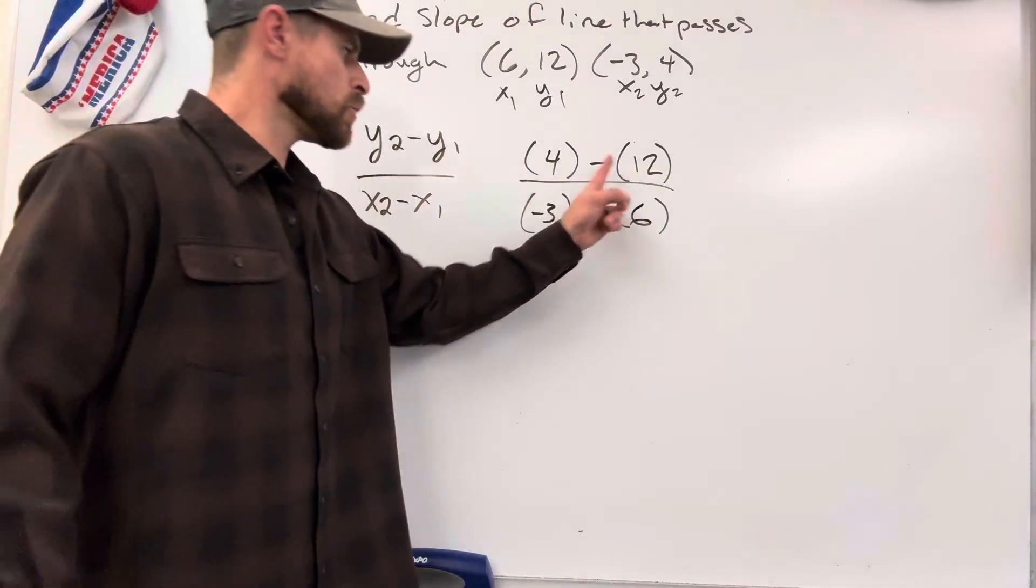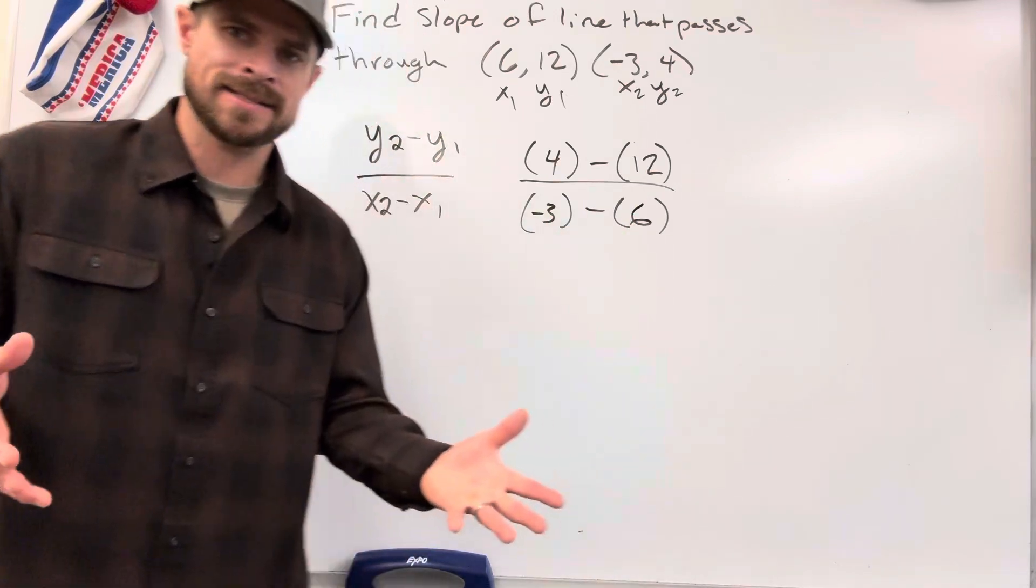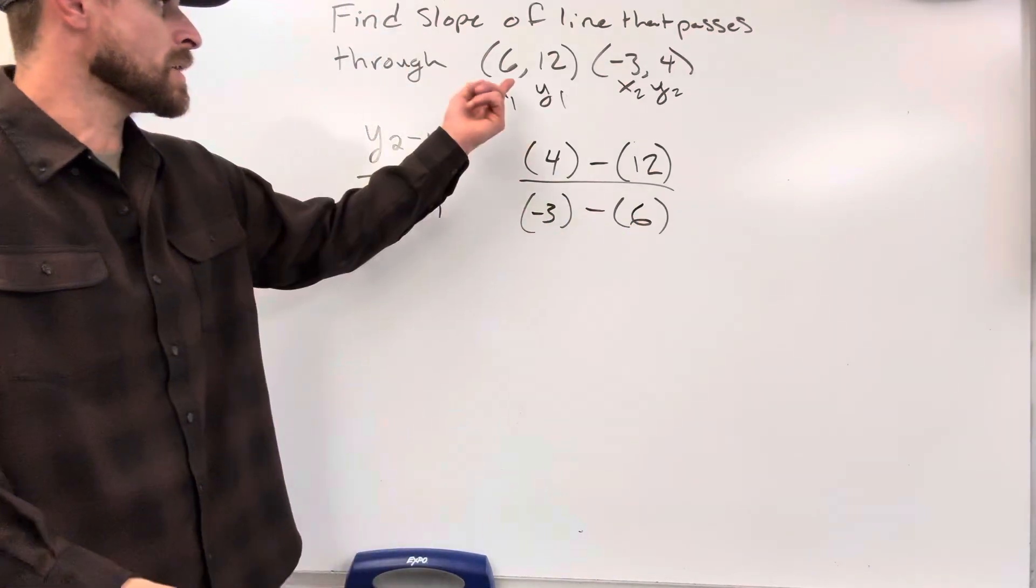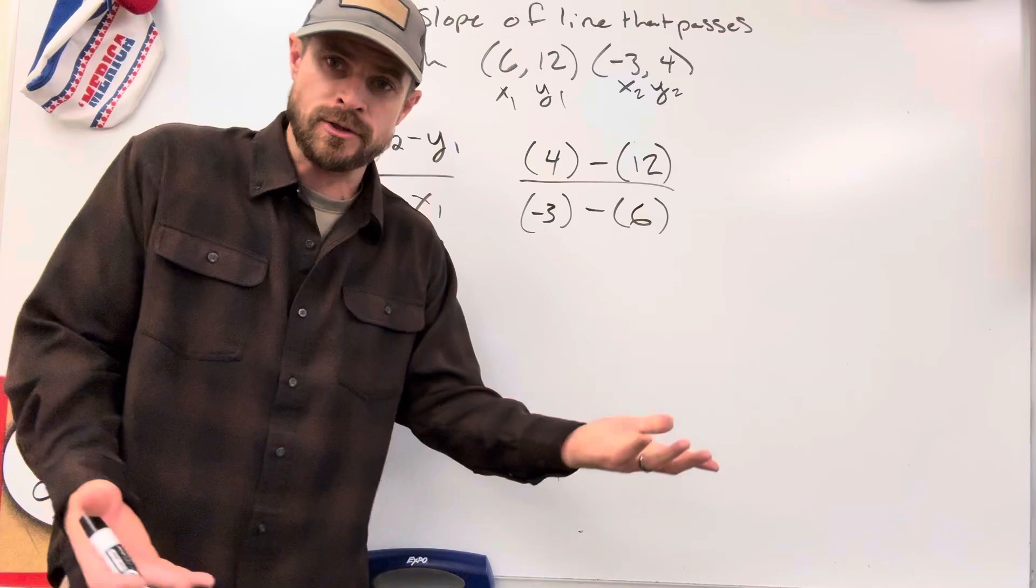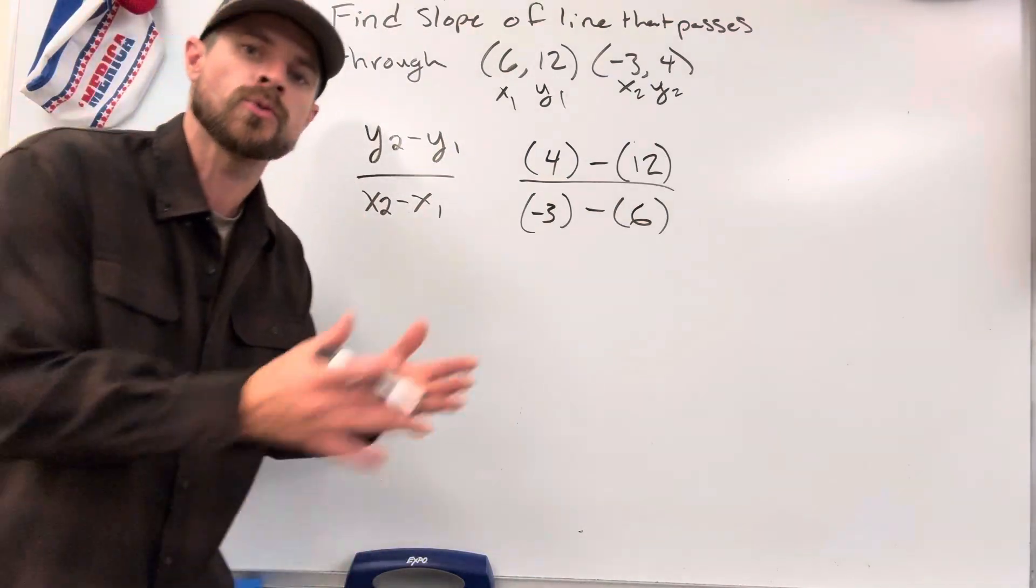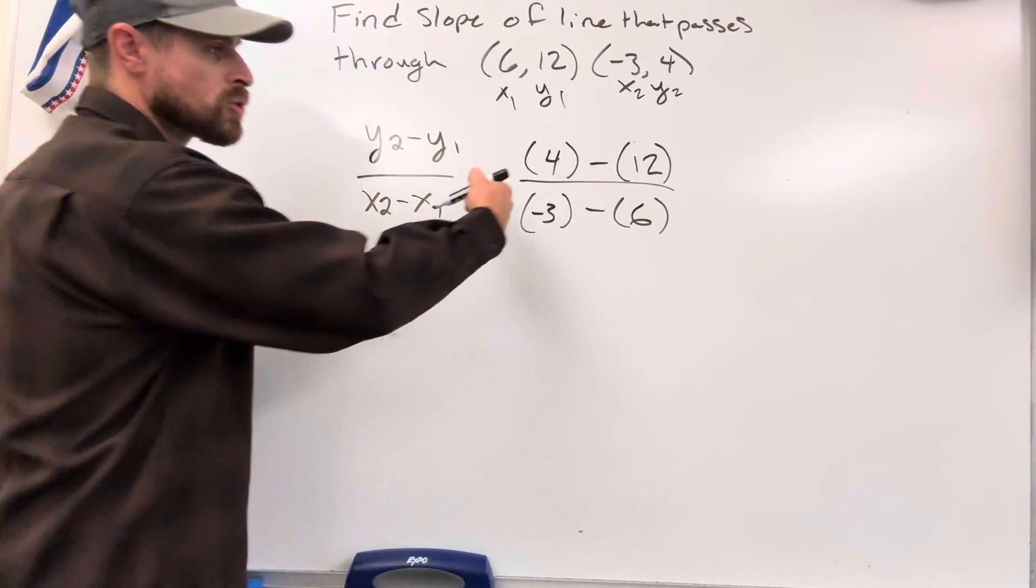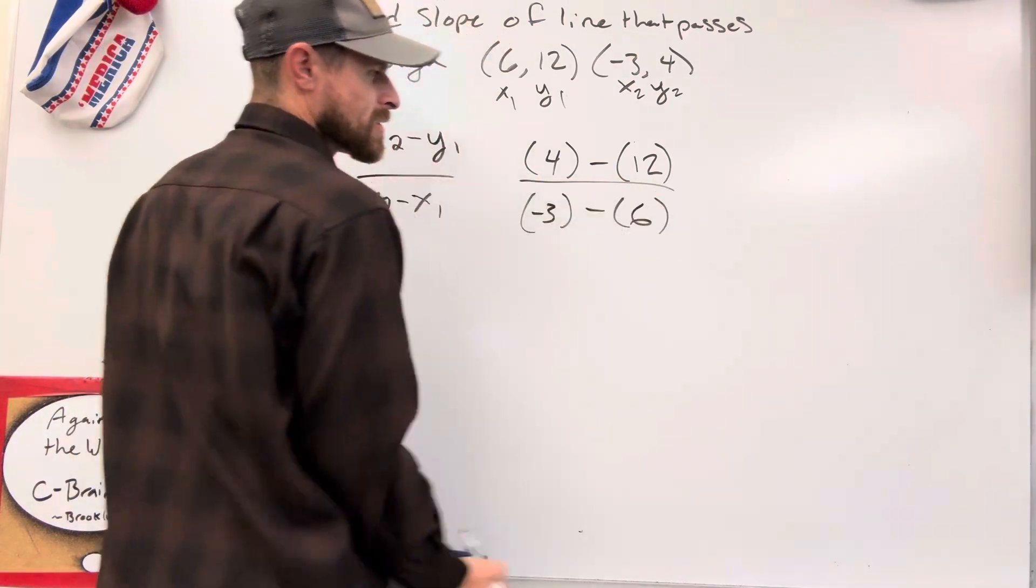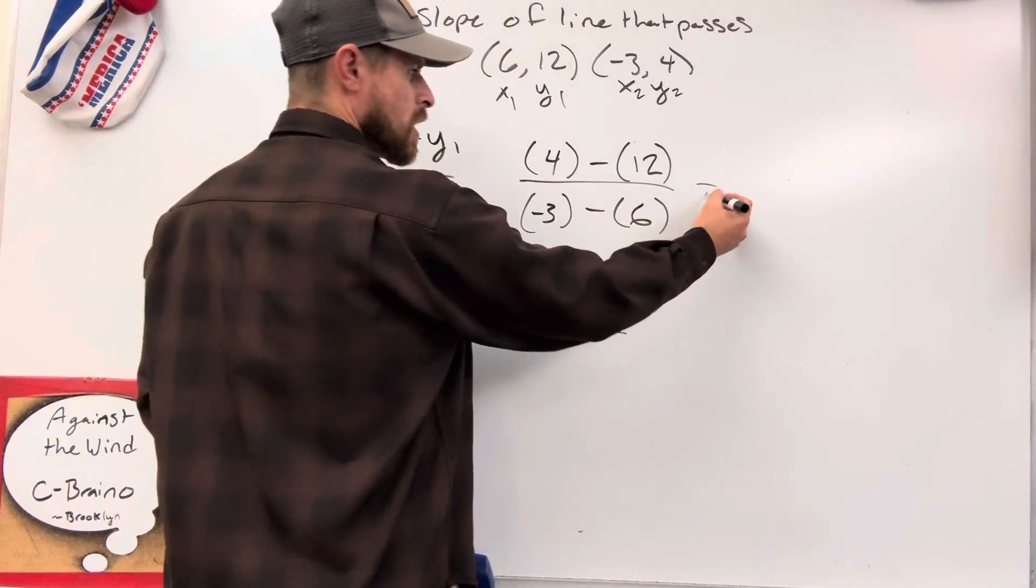You have 1, 2, 3, 4 spots to fill numbers in with, and you up here have 1, 2, 3, 4 values. So, you just got to make sure you put the correct numbers in the correct spots so that when you subtract, you're going to get the answer you're looking for, which will be your slope.